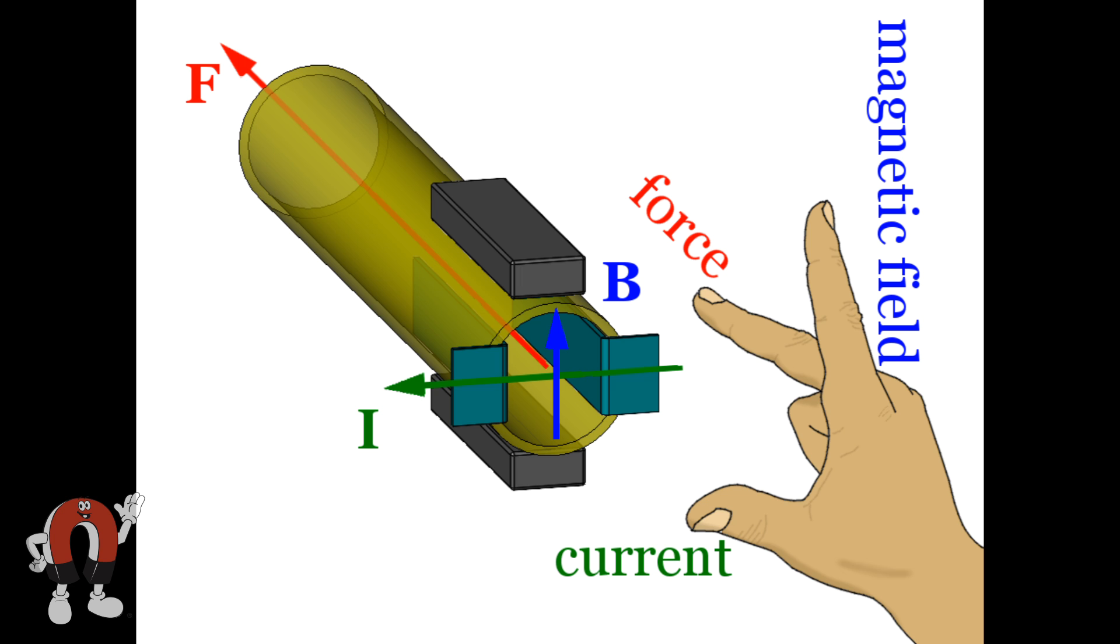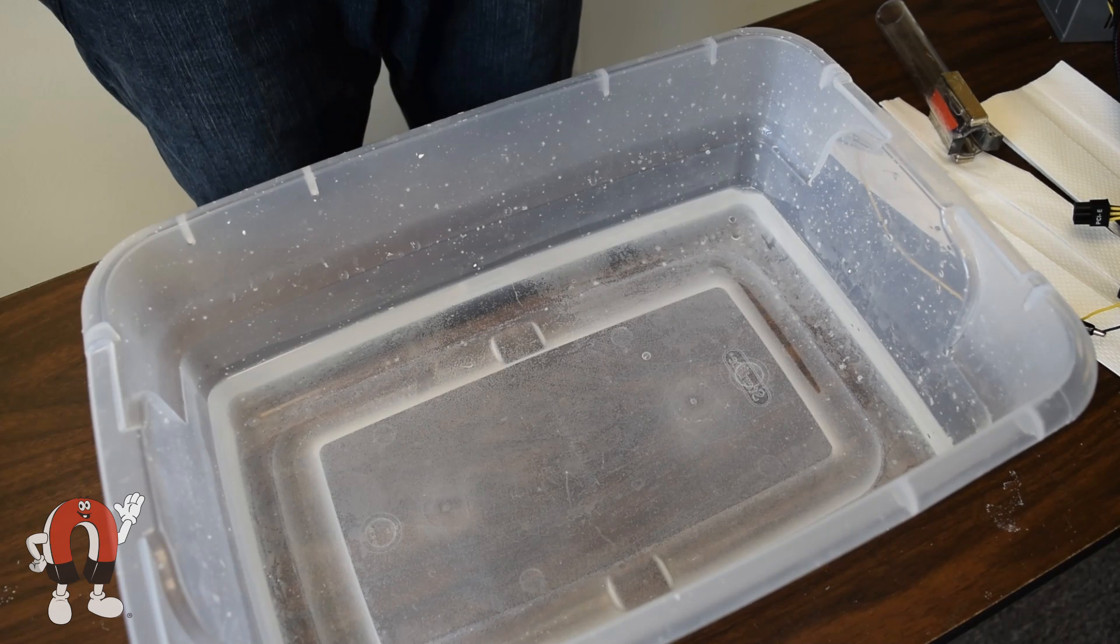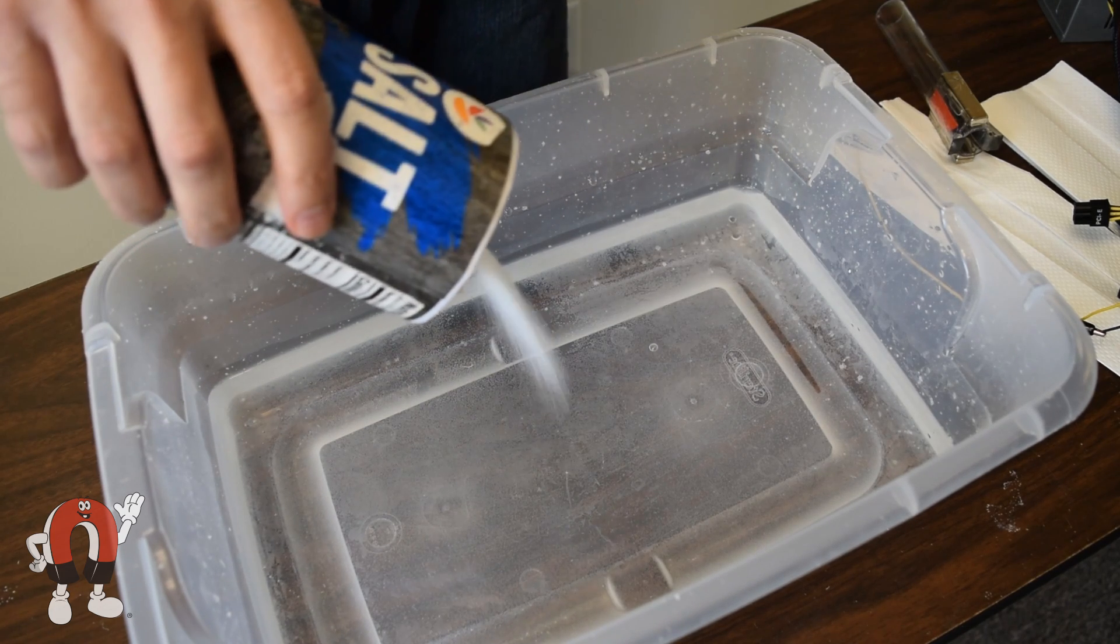The right-hand rule tells us which direction to expect the force in. With your thumb parallel to the electric current and your index finger parallel to the magnetic field, the force pushes perpendicular to both directions, coming out of your palm, or in this case, down the middle finger. Okay, that's enough theory. Let's test it.